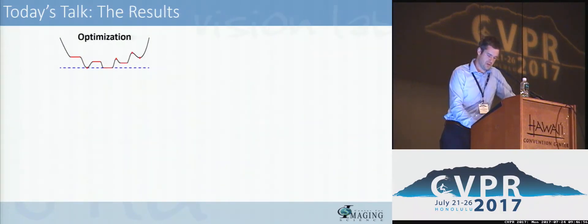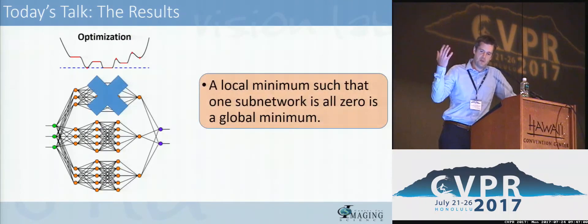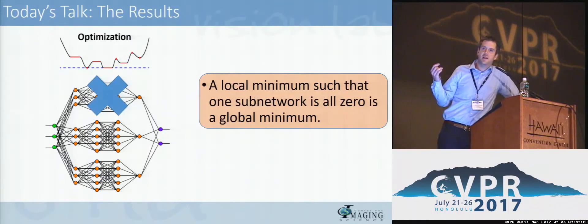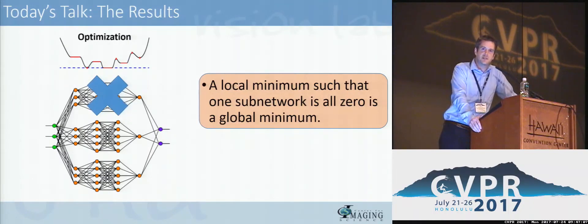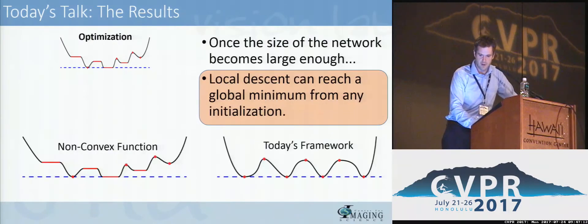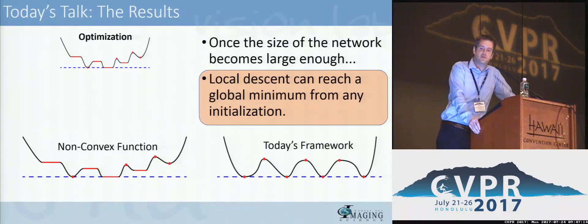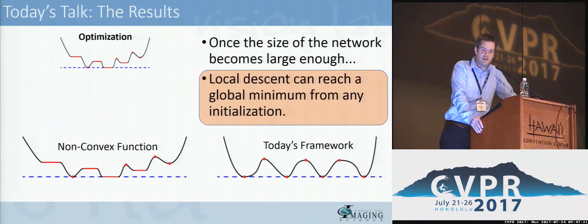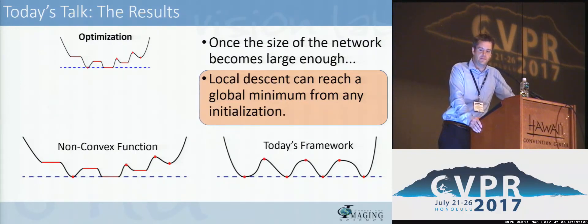From this framework, we'll be able to show a few things about the optimization problem in neural networks. In particular, we'll show that if you have a local minimum such that a piece of your network is all zero, that's actually a sufficient condition to guarantee that you're at a global minimum of the neural network training problem. Additionally, once the size of the network becomes large enough, you can guarantee that local descent will reach a global minimum from any initialization — in effect, guaranteeing that all local minima will actually be global minima.